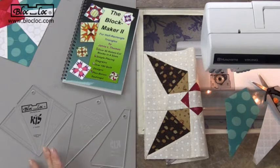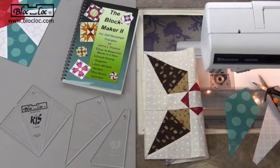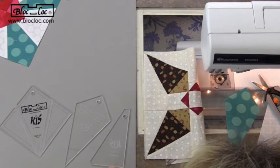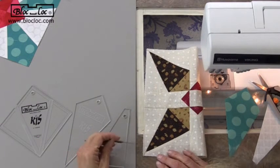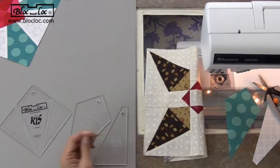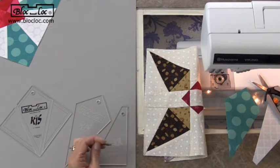You can find a lot of patterns for the kite and a square inside the Block Maker 2 book. What the kite and a square ruler actually does is it forces that point of your kite to be exactly within the quarter inch seam allowance so that you never lose that point.